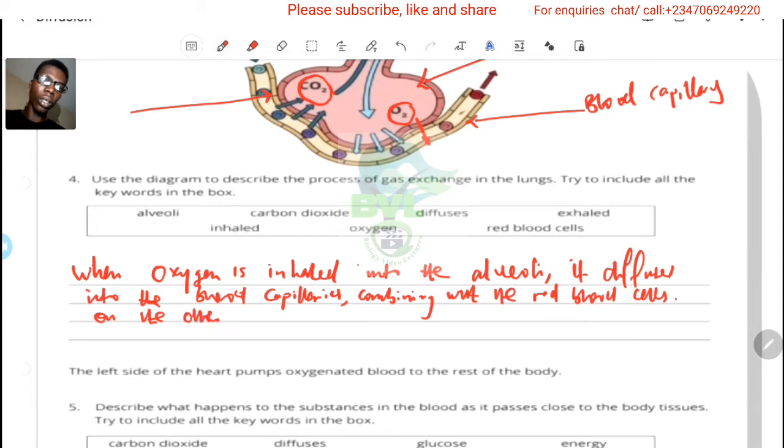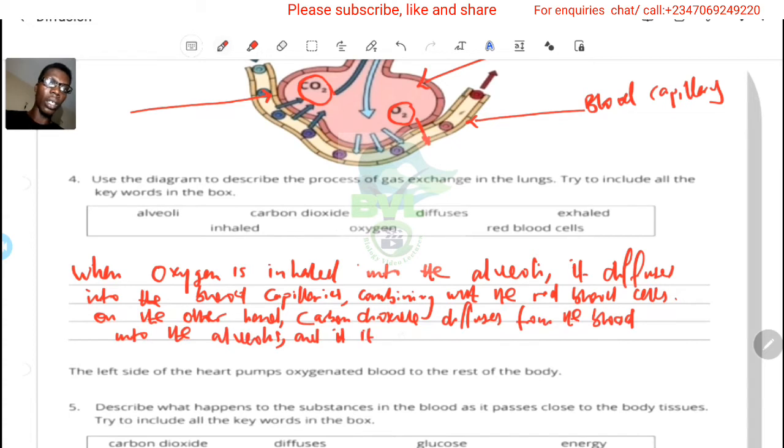carbon dioxide diffuses from the blood, the red blood cell into the alveolus, and it is exhaled back into the atmosphere.